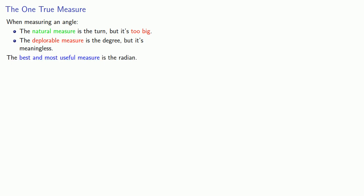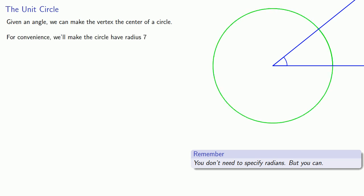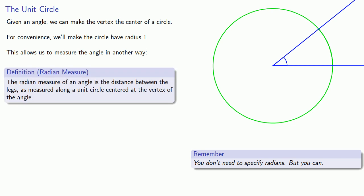And that comes about as follows. Given an angle, we can make the vertex the center of a circle. And for convenience, we'll make the circle have a radius of 1. This allows us to measure the angle in another way. The radian measure of an angle is the distance between the legs as measured along a unit circle centered at the vertex of the angle.